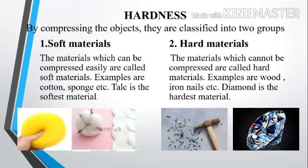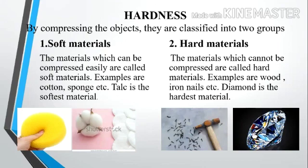Now, the third property is hardness. Students, we will understand this property by compressing the objects. On the basis of compression, they are classified into two groups: number one, soft materials, and number two, hard materials. The materials which can be compressed easily are called soft materials. For example, cotton, sponge, etc. Talc is the softest material — talcum powder. The materials which cannot be compressed are called hard materials. Examples: wood, iron nail, etc. Diamond is the hardest material on the earth.